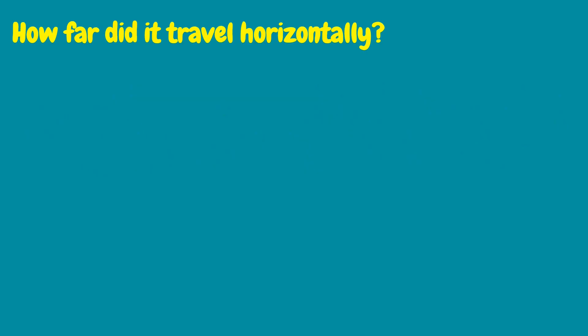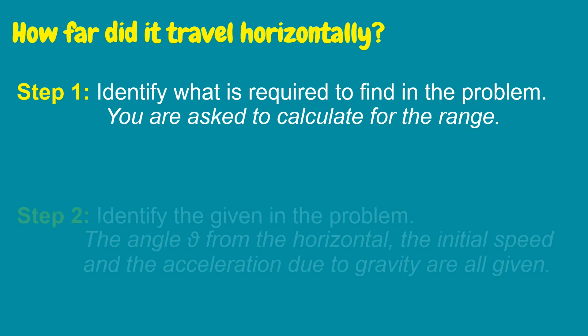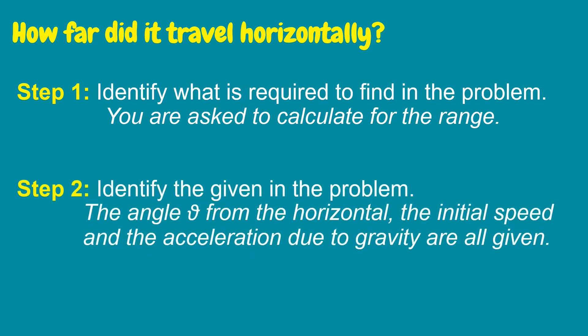To answer the problem, let's follow these steps. Step 1: identify what is required to find in the problem. You are asked to calculate for the range. Step 2: identify the given in the problem. The angle theta from the horizontal, the initial speed, and the acceleration due to gravity are all given.